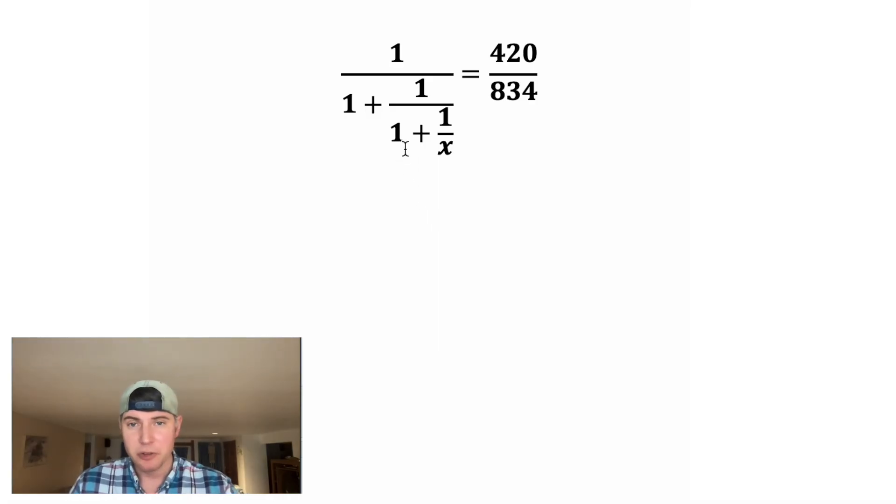For the first step, we want to do this 1 plus 1 over x. In order to give them a common denominator, we're going to multiply this one on the left-hand side by x over x. And x over x times 1 is just x over x. Now that they have a common denominator, we can write them as a single fraction. So it becomes x plus 1 over x.